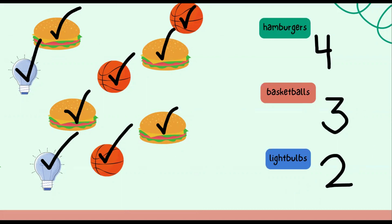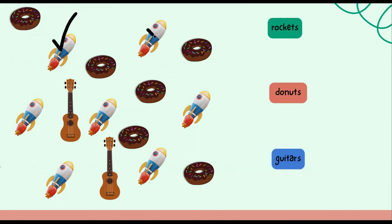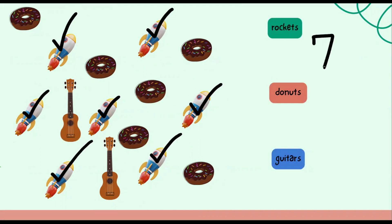Let's count our next set. In this set we have rockets, donuts, and guitars. First let's count our rockets. Count with me: one, two, three, four, five, six, seven. There are a total of seven rockets.